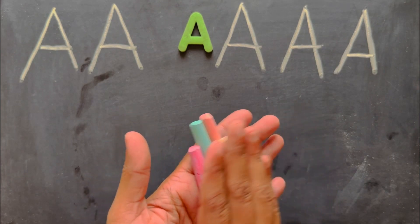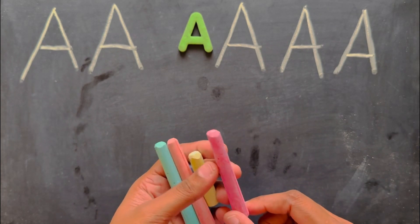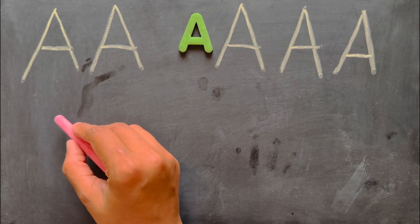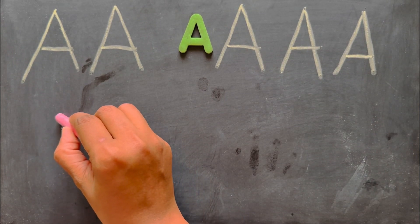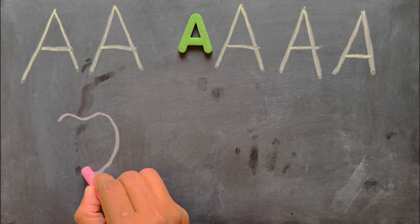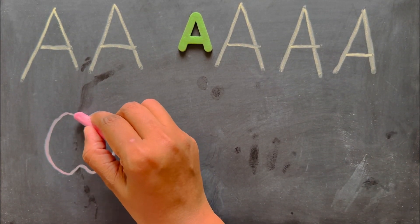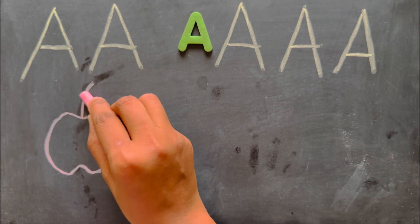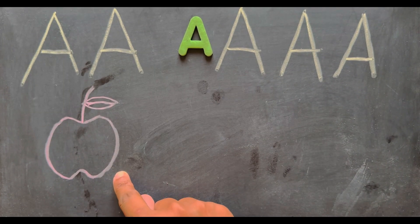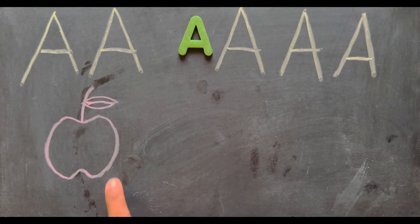Now let us draw some images for the letter A. A says apple. I am going to draw an apple in pink color. First for apple, you just draw some curve and then one more curve down, and then you finish it like this. For apple we are drawing some leaves. This is the shape of the leaf. What is the beginning sound of an apple? A. A says apple.